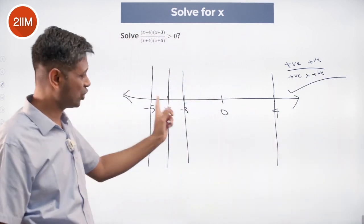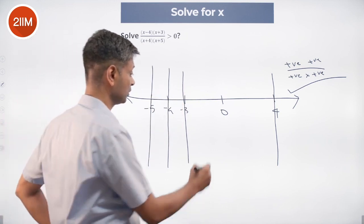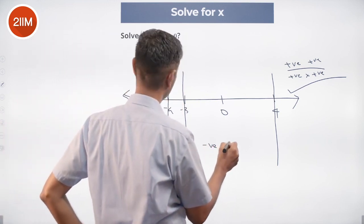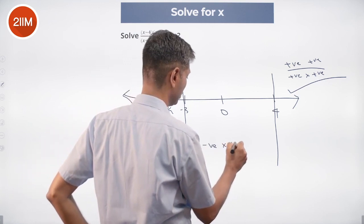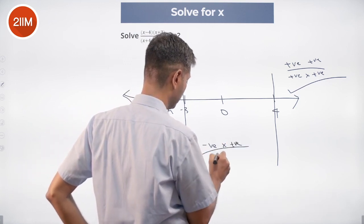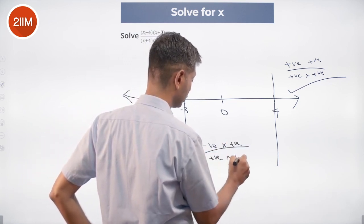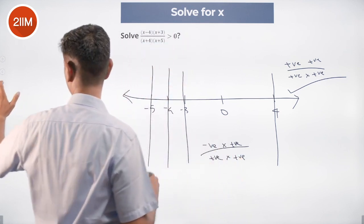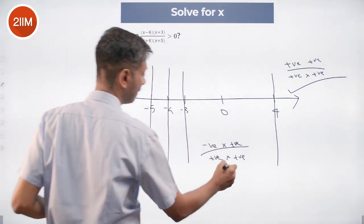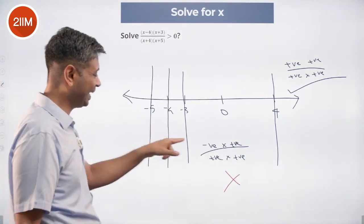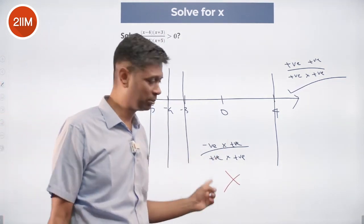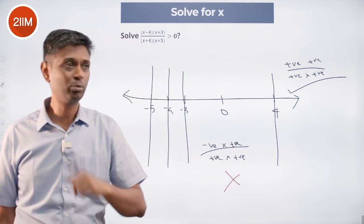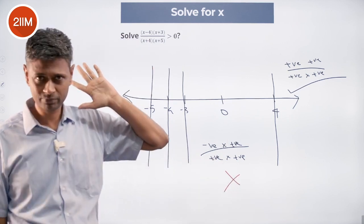Now I come to this range, minus 3 to 4. x minus 4 will be negative. x plus 3 is positive. x plus 3 is positive into positive, positive into positive. In this range, my expression will become negative. Negative into positive, positive into positive, negative by positive. This does not work.